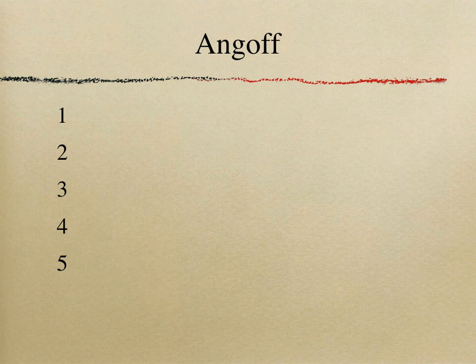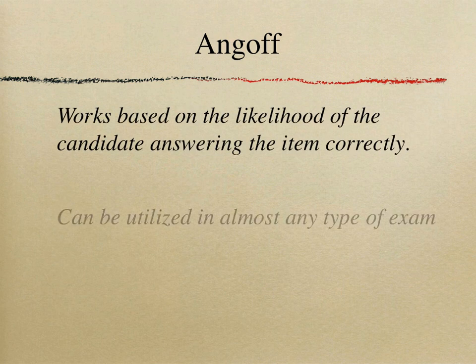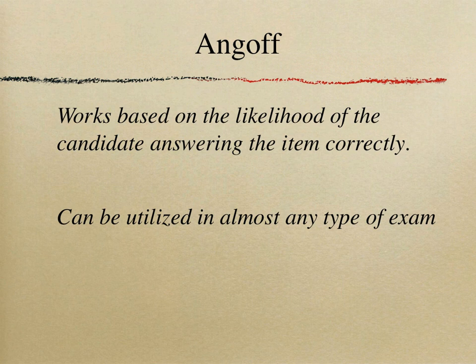If you had an exam paper of five items, you ask a panel of judges to estimate the likelihood of a borderline candidate correctly answering each item. In this example: 50% chance for the first item, 80% for the second, 60% for the third, and so on. Then, just as with Nedelsky, you sum all the odds, divide by the number of items, and multiply by 100.